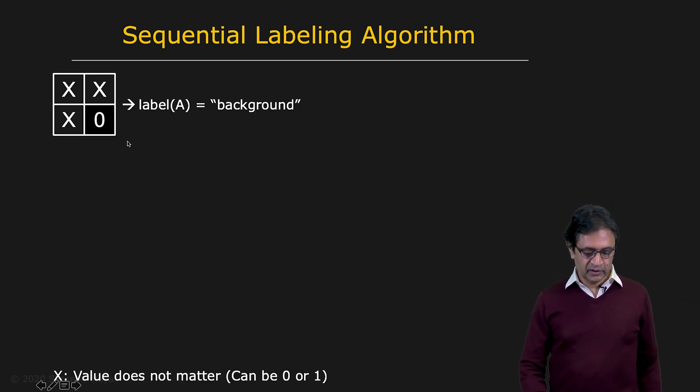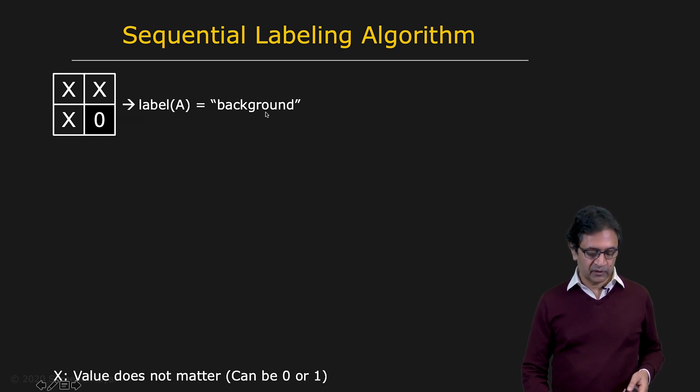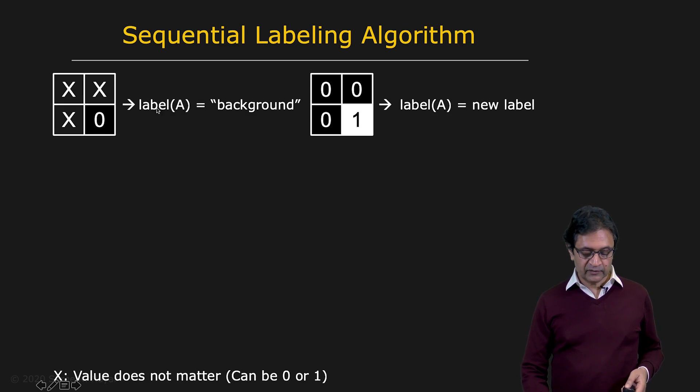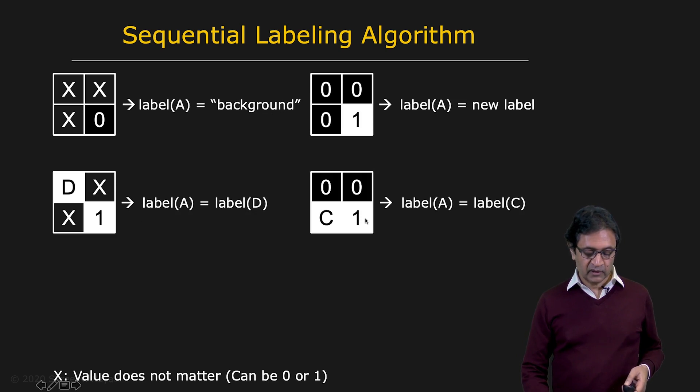So let's see how this is done. Here's the simple algorithm. So we assume that if we say that this pixel a, remember that this is the pixel a, this is b, c, and d. If a is a 0, then we don't have to worry about it. We call it a background. It doesn't matter what these are. By the way, x's mean we don't, doesn't matter what the value is. If a is a 1 and the rest are, these three are 0, we give it a new label. If a is a 1 and d is labeled, irrespective of what's going on with b and c, we're going to give a the same label as d.